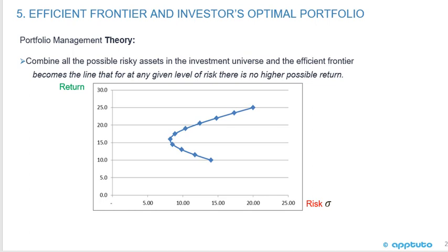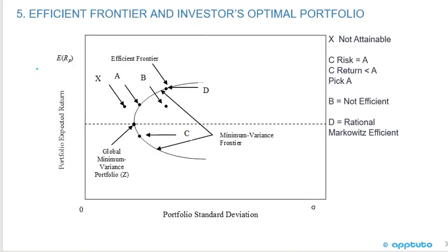I put the word 'theory' in bold. The theory combines all possible risky assets in the investment universe, and the efficient frontier becomes the line that, for any given level of risk, there's no higher possible return. This is a theory because we're combining all possible risky assets in the investment universe. We have our familiar return on the y-axis and risk on the x-axis — here we have a graph of the efficient frontier.